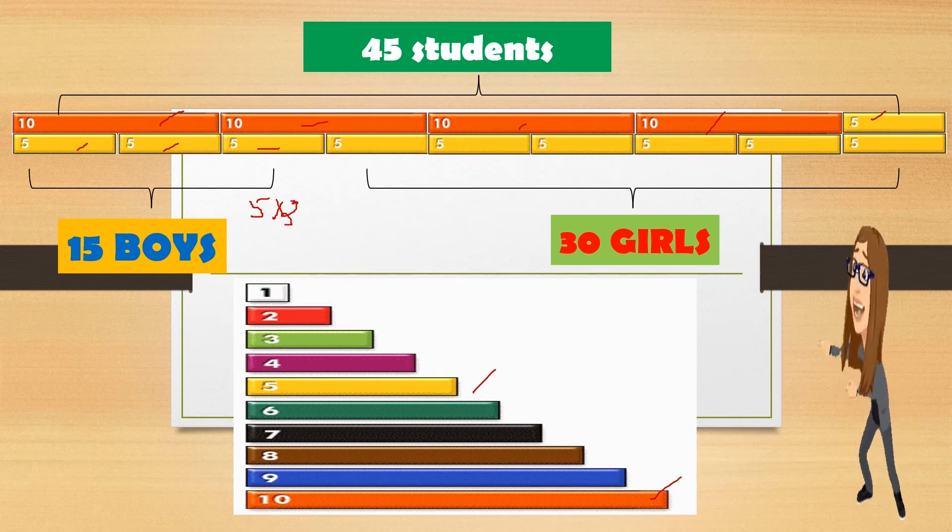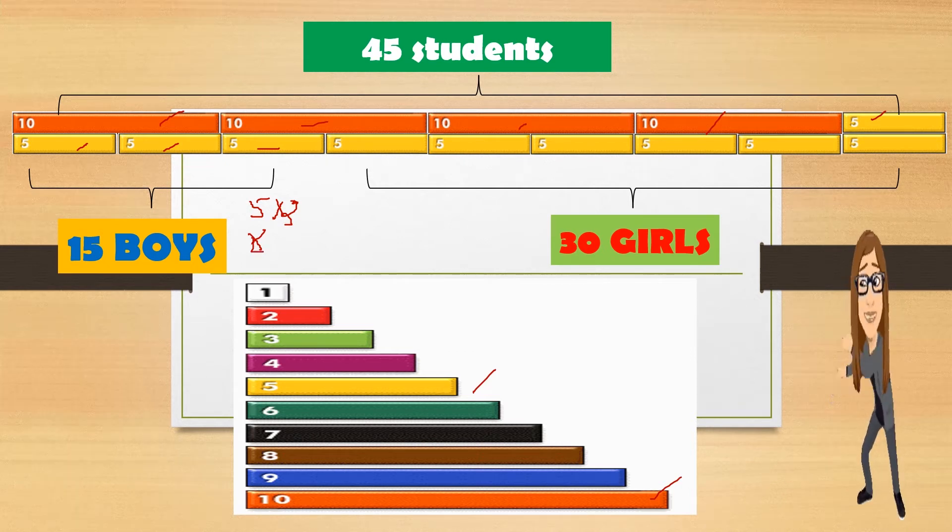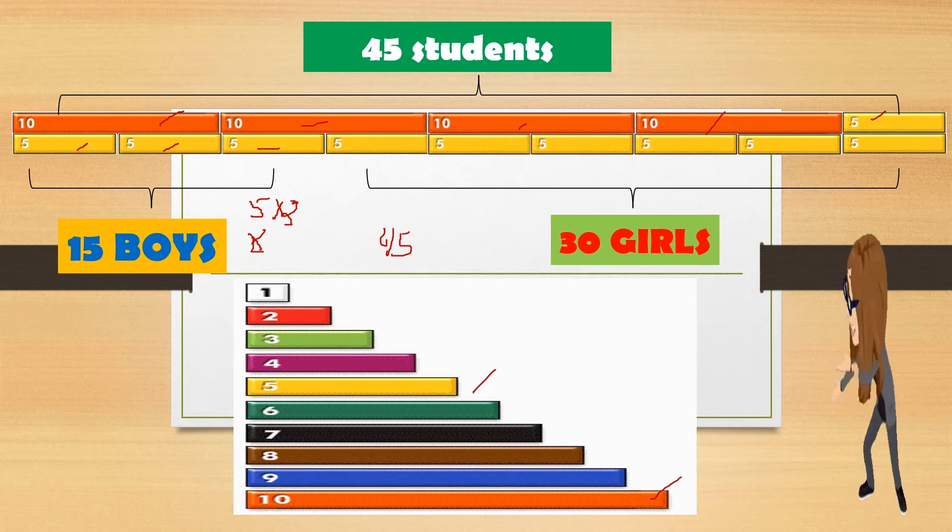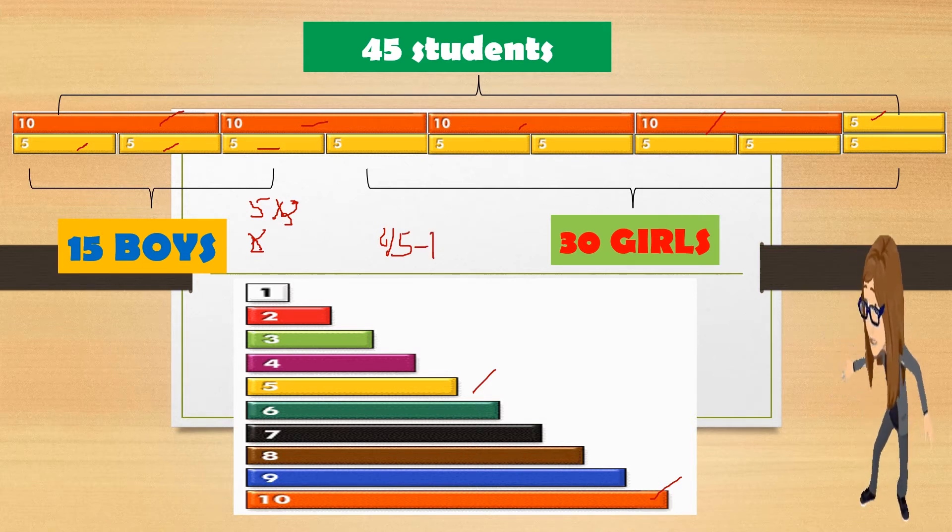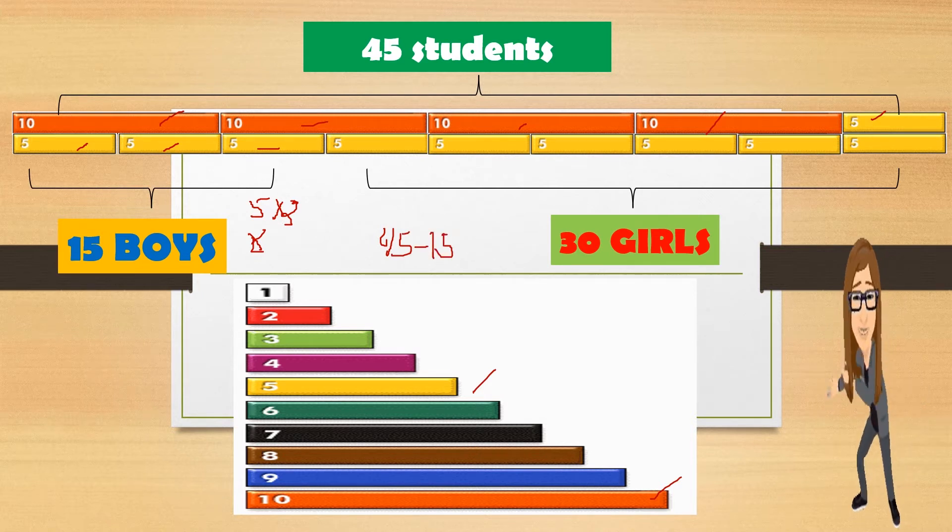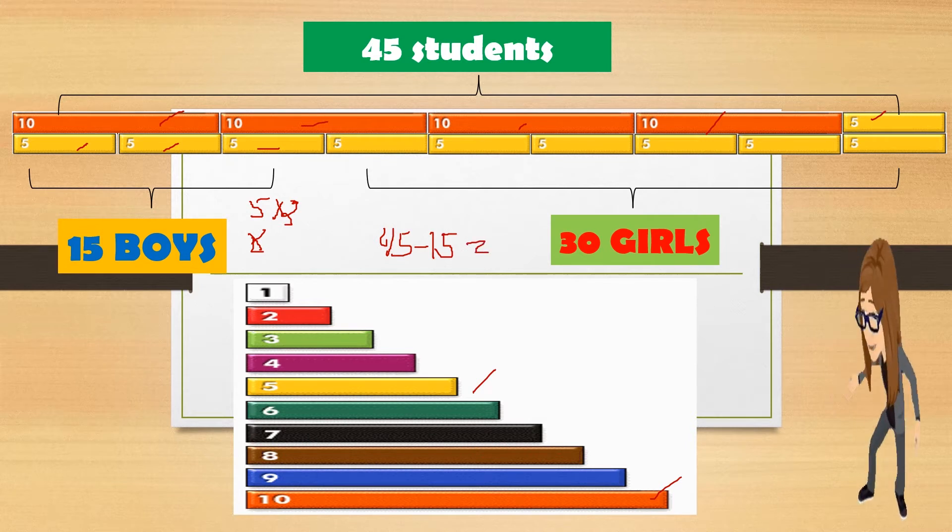So if we have 45 students minus 15, how many girls? We have 30 girls.